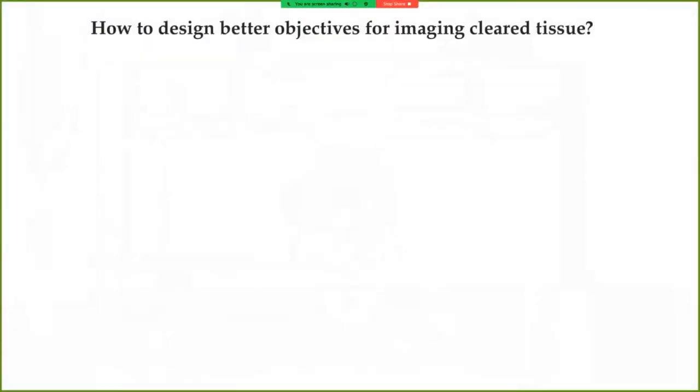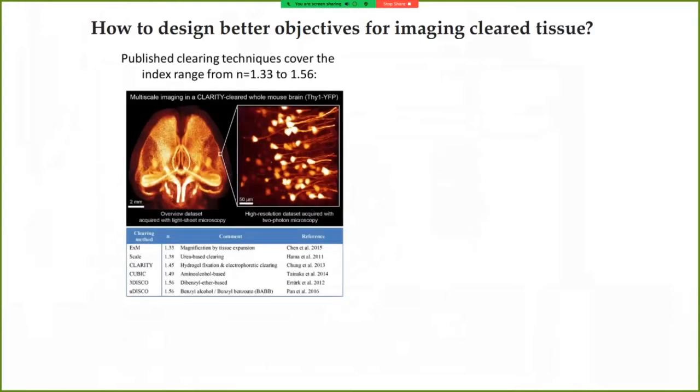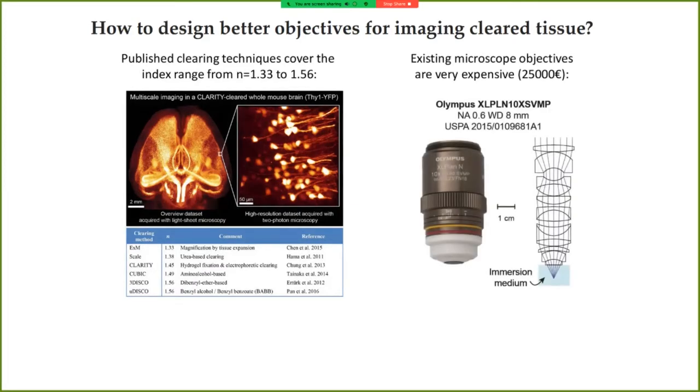So the challenge I'm addressing here is the question of how can we design better objectives for imaging cleared tissue? And imaging cleared tissue is a hard problem because currently we have such a wide range of different indices for immersion media that published clearing techniques cover. For example, for expansion microscopy, samples usually need to be imaged at an index of 1.33 or in water, whereas for organic solvent techniques, oftentimes we're imaging with indices of 1.56. And even though this is only part of what glass types cover, this is actually a pretty gigantic index range to properly correct microscope objectives for. And as a result, existing microscope objectives to cover at least part of this range are very expensive.